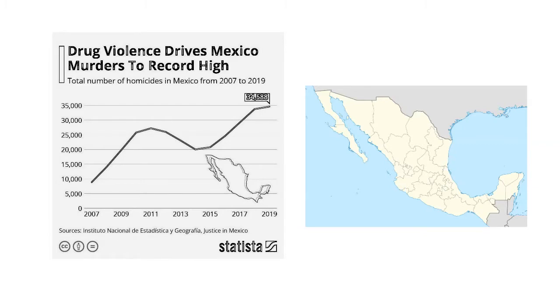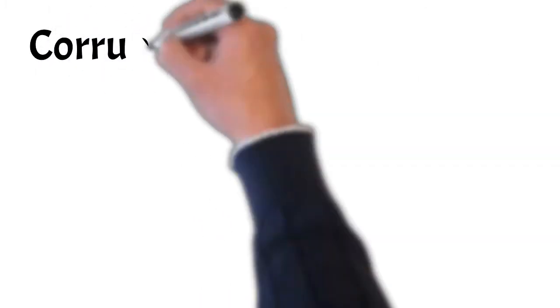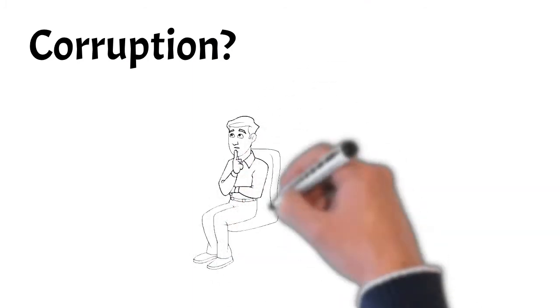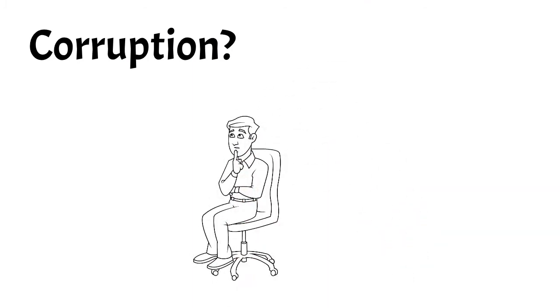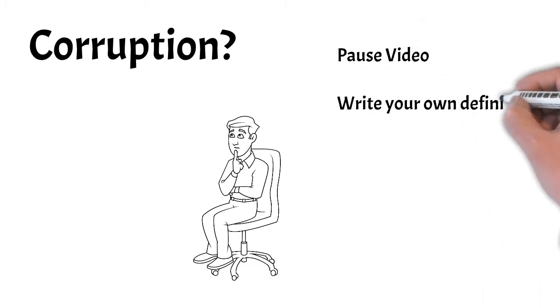What do we mean when we say that the PRI constructed a system of corruption which allowed the drug trade to grow? What does the term corruption really mean? So what I'd like you to do is actually pause the video, take out a piece of paper, and try to answer this question: Corruption—what is it?